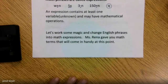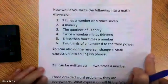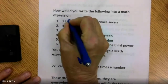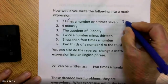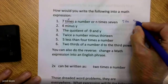Let's work some magic and change these English phrases into expressions. Ms. Renee gave you math terms that come in handy at this point. How would you like to write the following into a math expression? 'Seven times a number' or 'N times seven.' Look at your terms. Times means multiply, so we could write this as seven times a number. But really, in upper math we no longer put that little cross mark — we just write it as 7N.